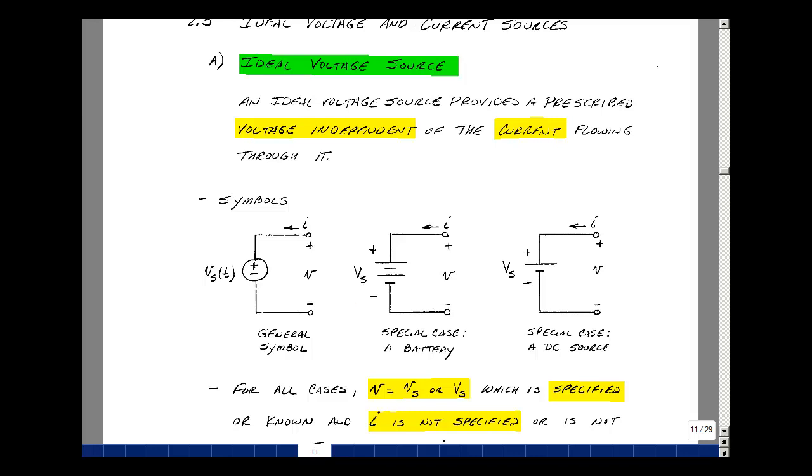We also have power supplies that are not batteries, but they're actually circuits that convert the wall outlet to a constant voltage versus time. We use just one long line and one short line. Again, the V and the I in the same direction.